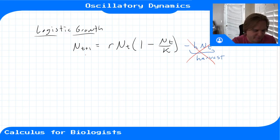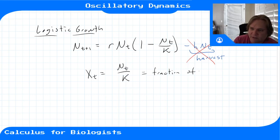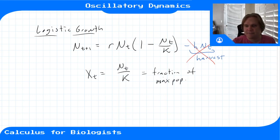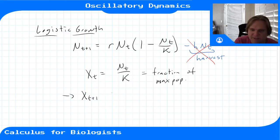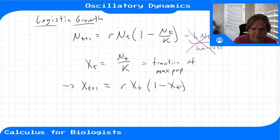To simplify the math, we substitute x_t = N_t / K, which is the fraction of the total or maximum population. With this substitution, the discrete time system becomes x(t+1) = r · x_t · (1 - x_t), which is a bit simpler to work with. Let's look at what happens for different growth rates r using cobwebbing diagrams.